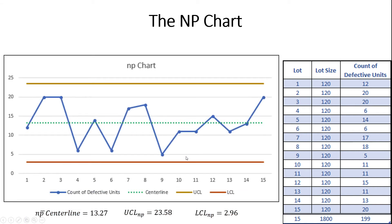Here's the NP chart. You can see the center line in green — this is the center of our process. On average, we get about 13 defective units per subgroup. You can also see the upper and lower control limits. All we're doing is asking our team to plot the count of defective units per subgroup: 12, 20, 26, 14. In general, this process looks like it's stable and in control.